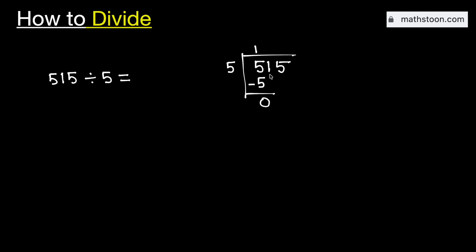Now this 0 is less than 5. That is why we need to bring down this number 1 here. We know that there is no meaning of 0's on the left, so remove this 0.